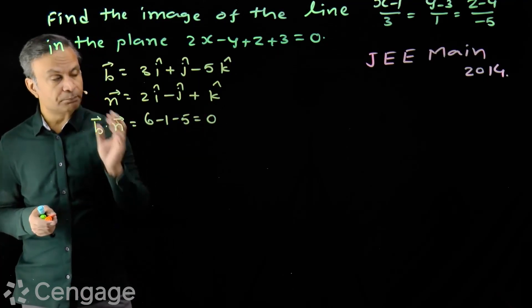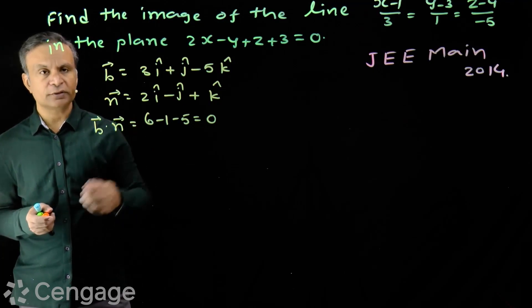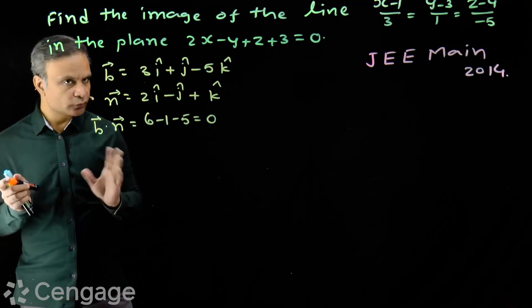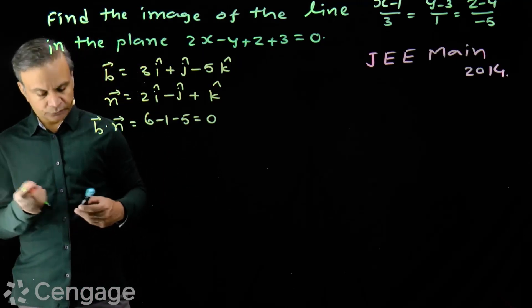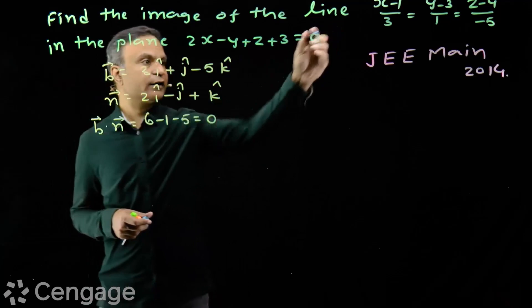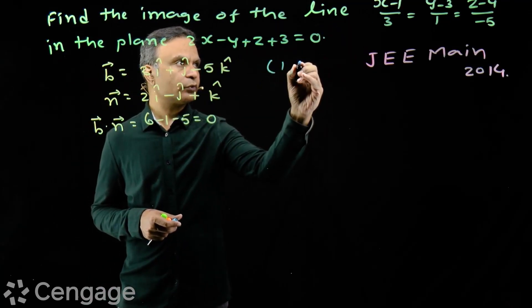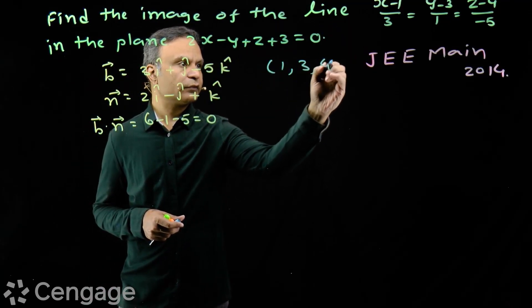So line will be either parallel to the plane or it will lie on the plane. Kaise check karenge? We consider point lying on the line. Line is passing through point having coordinates 1, 3 and 4.